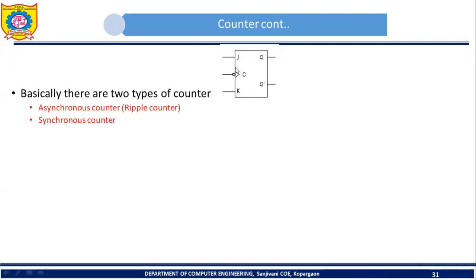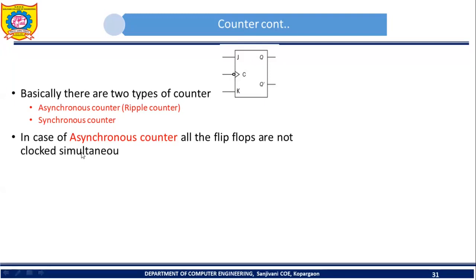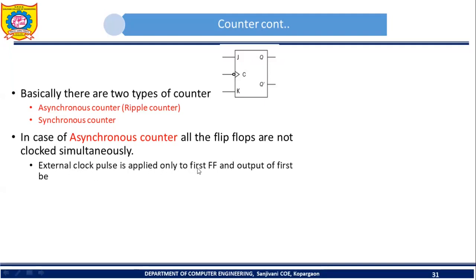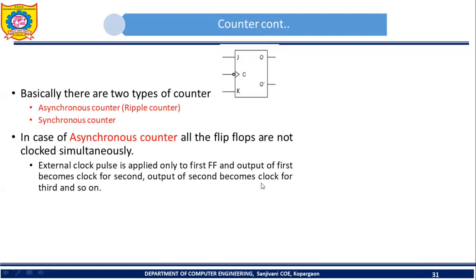Let's see what is the source of the clock pulse in case of an asynchronous counter. In case of an asynchronous counter, all the flip-flops are not clocked simultaneously. The external clock pulse is applied only to the first flip-flop. The output of the first flip-flop becomes the clock for the second flip-flop, and the output of the second flip-flop becomes the clock for the third flip-flop, and so on.